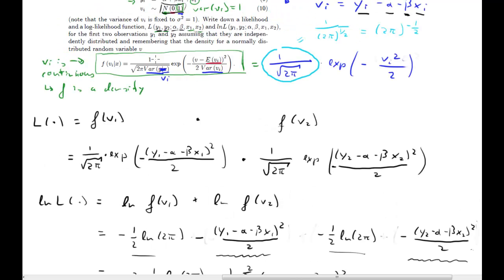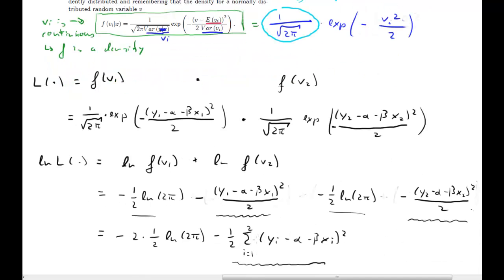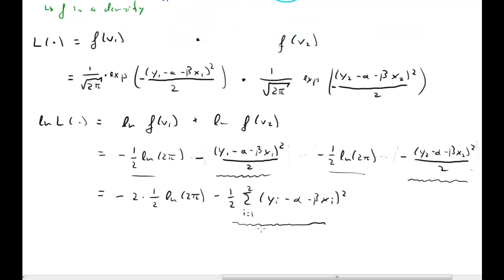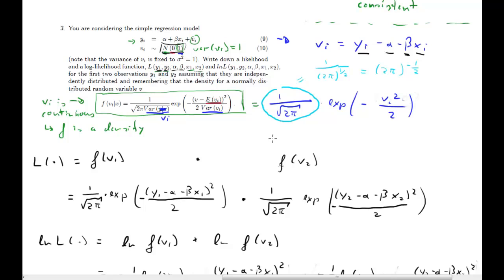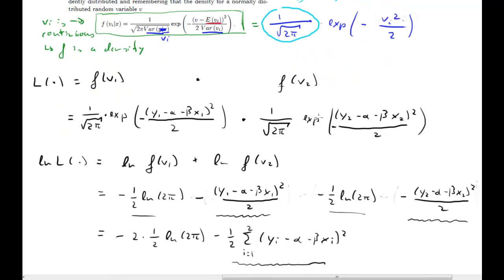That's what the question asked for: the likelihood and log-likelihood function for the first two observations. As a reminder, the maximum likelihood estimator chooses the values of alpha and beta that maximize the log-likelihood function — equivalently, the likelihood function. Maximizing one is the same as maximizing the other. This was all that was asked in question 3, and there's a continuation in the exercise class.